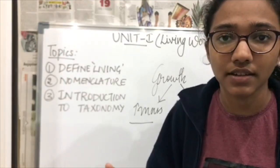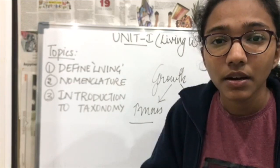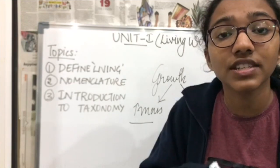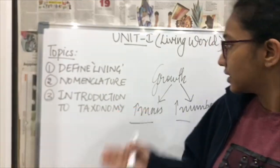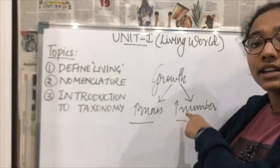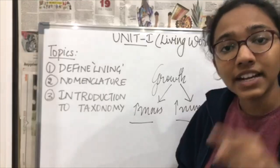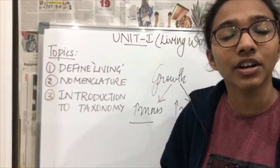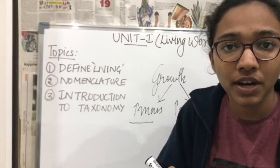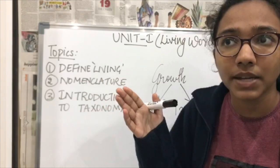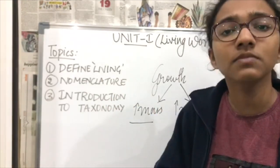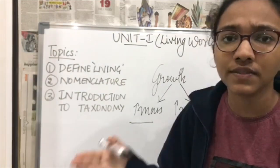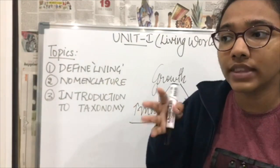Binary fission is actually a method of reproduction, and what we've learned is that growth indicates increase in number of individuals. That means that in unicellular organisms, growth and reproduction are basically the same. But when you consider multicellular organisms, growth and reproduction are completely exclusive events.